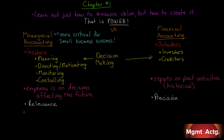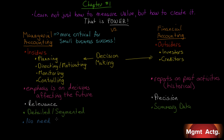Managerial accounting provides detailed and segmented data, whereas at the financial accounting level we're looking more at summary data — for example, sales by segment or geography, not necessarily by every single product line. With management accounting, there is no need to follow GAAP; we provide information in whatever form is most useful and most relevant. But with financial accounting, we need comparability across companies, so we've got to follow GAAP.